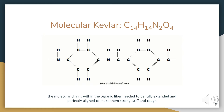The molecular formula of Kevlar is C14H14N2O4, and as you can see here this is the organic molecule of Kevlar. The reason that Kevlar is so strong and so stiff is because of these bonds and their orientation — they have to be perfectly aligned and extended in order to make Kevlar as strong as it is.